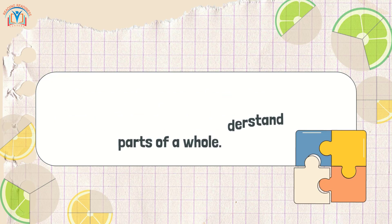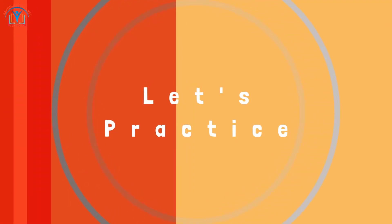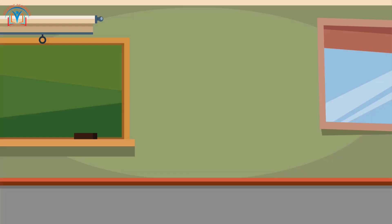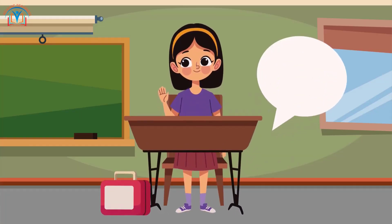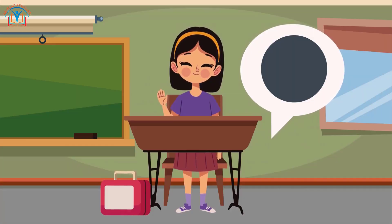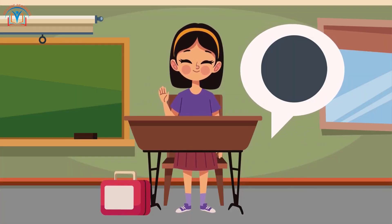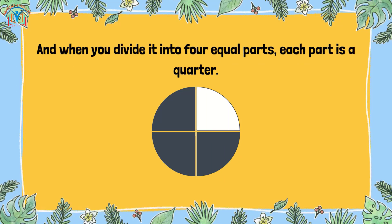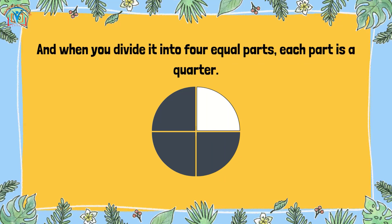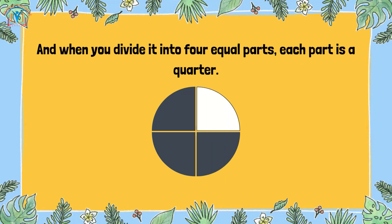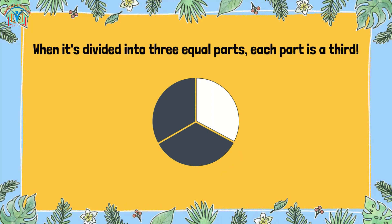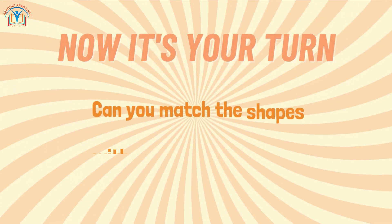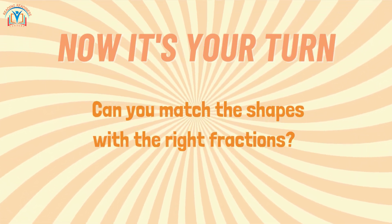Let's practice! Imagine you have a shape. When you split it into two equal parts, each part is a half. When you divide it into four equal parts, each part is a quarter. When it's divided into three equal parts, each part is a third. Now it's your turn — can you match the shapes with the right fractions?